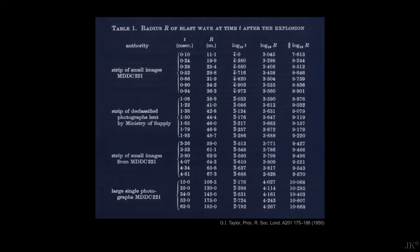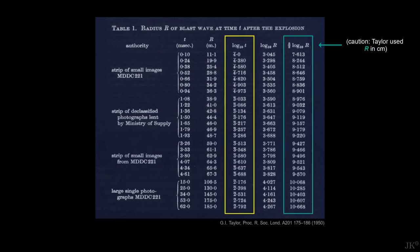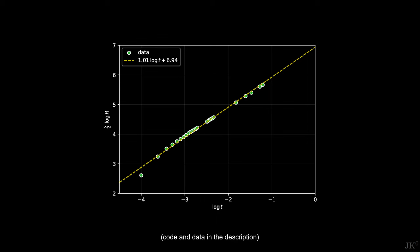we can see the dataset that Taylor created. The central column shows the values of the x-axis and the right-most column shows the values of the y-axis. Note that only photographs of the first few milliseconds are included. Even though Taylor had more images available, he knew that the assumption number 2 used to derive his formula could not be valid at later times, as I mentioned in the previous video. This is what the plot looks like. We can confirm that the two predictions of his formula are correct. The data falls along a straight line, and the slope is equal to 1.